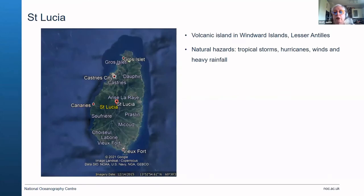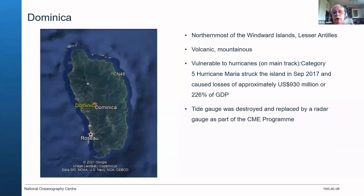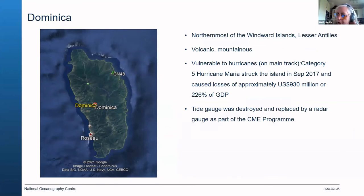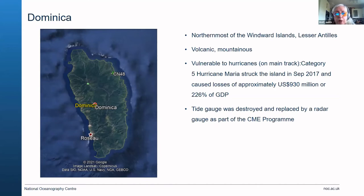St. Lucia is another volcanic island in the Windward Islands, Lesser Antilles, subject to the same tropical storms, hurricanes, winds, and heavy rainfall. Dominica, northernmost of the Windward Islands, is volcanic and mountainous, vulnerable to hurricanes on the main track. A Category 5 hurricane, Maria, struck in September 2017, causing losses of approximately 930 million US dollars — or 226% of GDP — a huge impact for a small island state. The tide gauge was destroyed and was replaced as part of the CME programme.